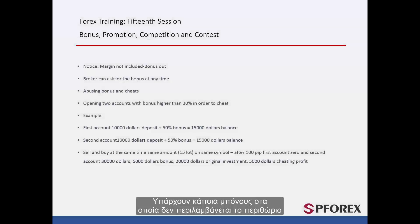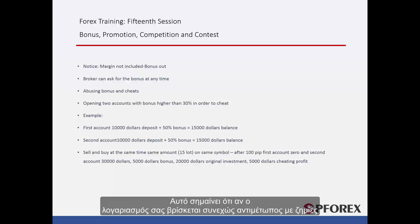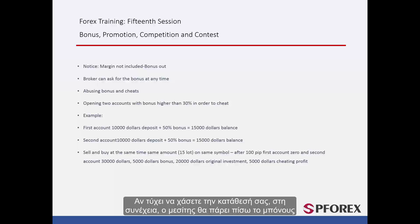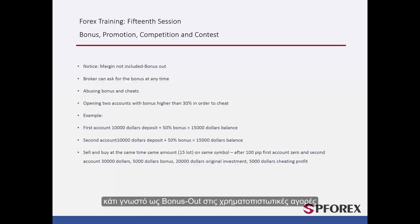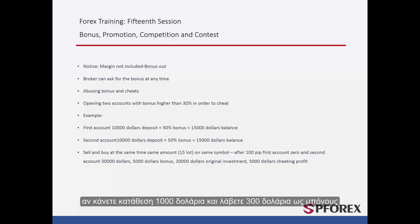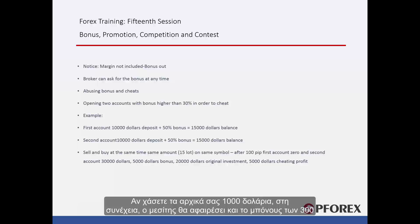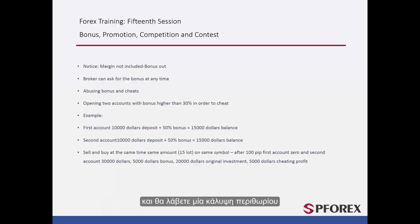There are some bonuses in which margin is not included. This means that if your account is facing losses, you can only risk up to the amount that you deposited and the bonus is not included. If you happen to lose your deposit, then the broker will take out the bonus — known as 'bonus out' in financial markets. For example, if you deposit $1,000 and receive $300 as a bonus, your account would be $1,300. If you lose your initial $1,000, then the broker will take out the bonus as well and you will receive a margin call.